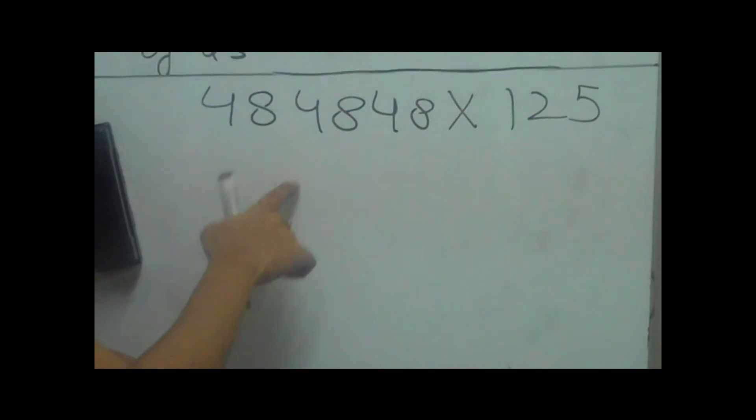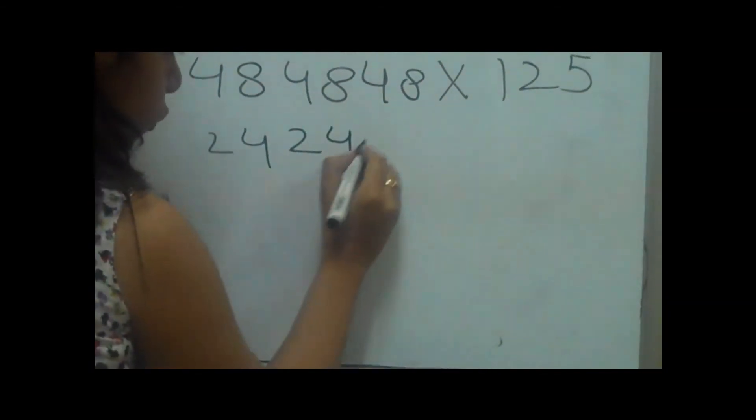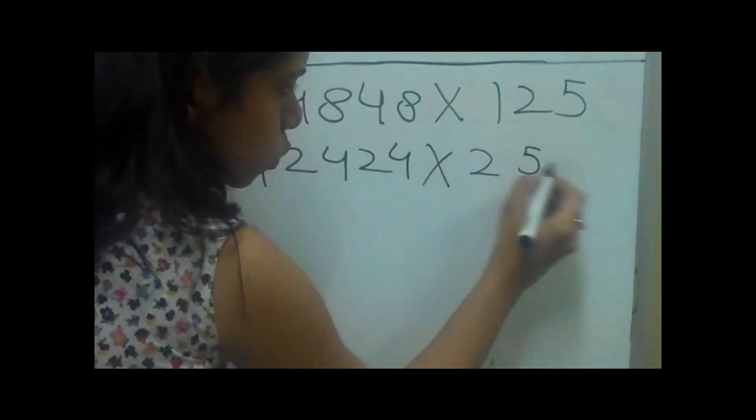Now dividing the even number by 2 makes 24. Multiplying it by 2 makes 250.